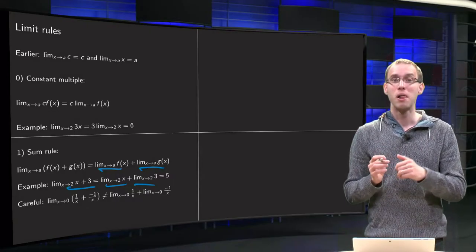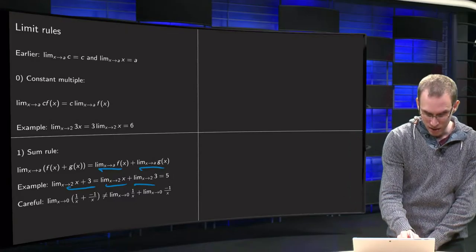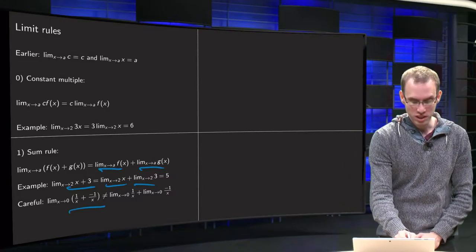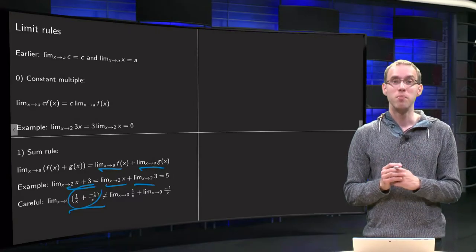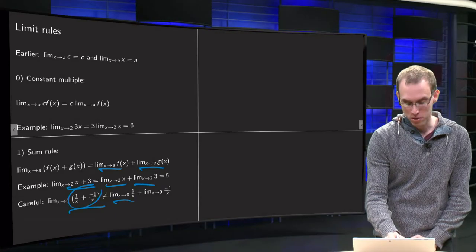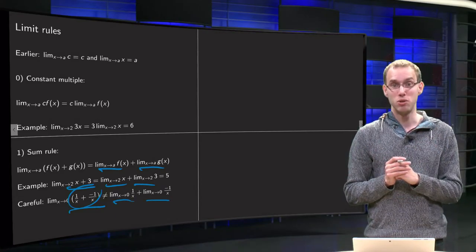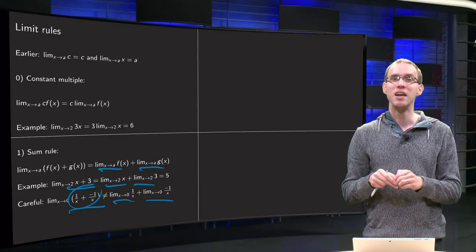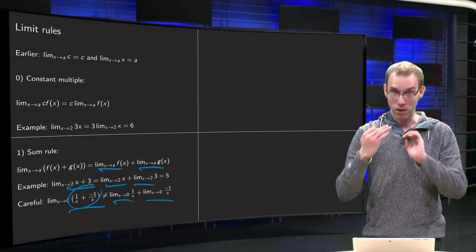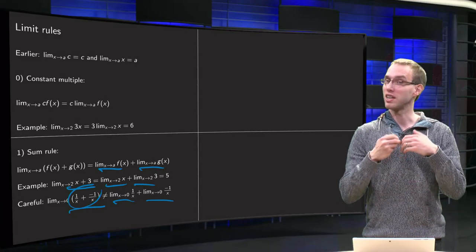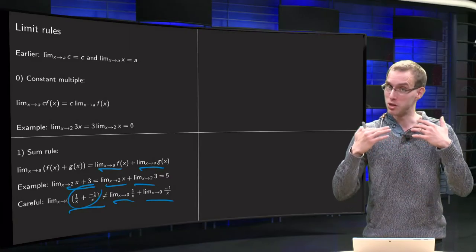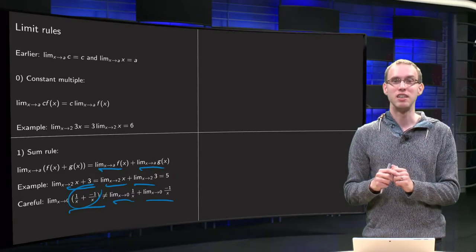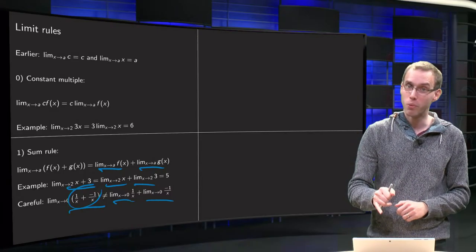Here is an important caution: this rule only applies if both limits exist. For example, the limit x to 0 of 1/x plus (−1/x) — what's inside is 0, so it should be 0. But you cannot take those separately, because the limit of 1/x and the limit of −1/x both do not exist. In practice, this is no problem: you just apply the sum rule and see whether the limits exist. If they do, you're done; if not, you couldn't have applied the sum rule in the first place, so you have to go back anyway.